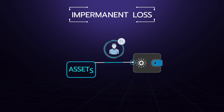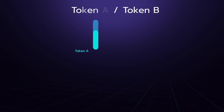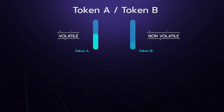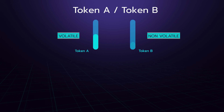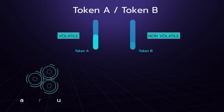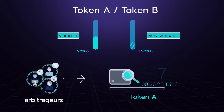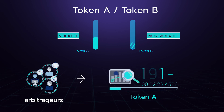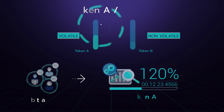When the external price of one token in a liquidity provider pair changes price in volatile relation to the other, arbitrageurs have the opportunity to buy and profit in the better-performing token at a discount. The liquidity provider earns some fees but loses on the token appreciation.